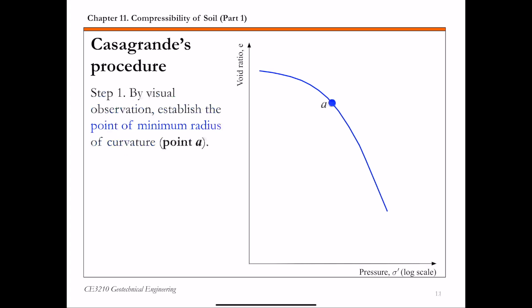The first step in this Casagrande's procedure is to establish the point of minimum radius of curvature. That is shown as point A. Do this by visual inspection. This is the point where the curve changes the slope the most.